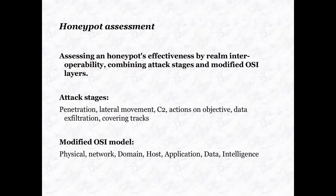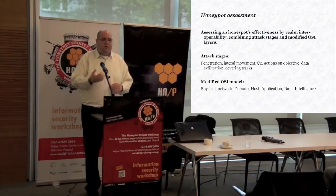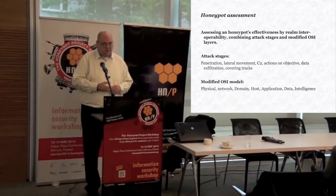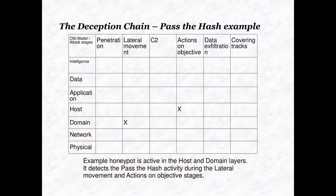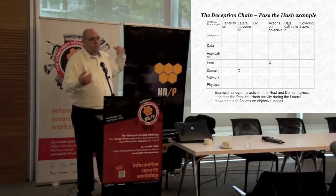How do we assess these honeypots, or the technologies that lead to them? We have the attack stages - you can use the kill chain, but for me the last layer, actions and objectives, is what I'm looking for. So: penetration, lateral movement, C2, actions and objectives, data exploration, covering tracks - you can choose your own. And the modified OSI model of where it's happening: physical network, domain, host, application, data and intelligence. The more areas I cover, the more correlations I cover, the better the honeypot is.